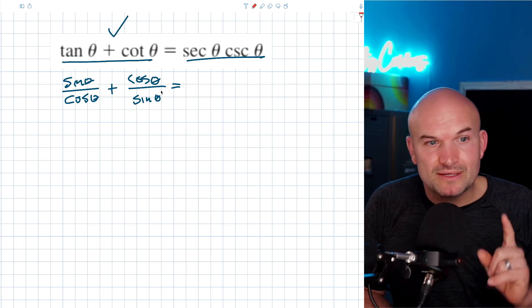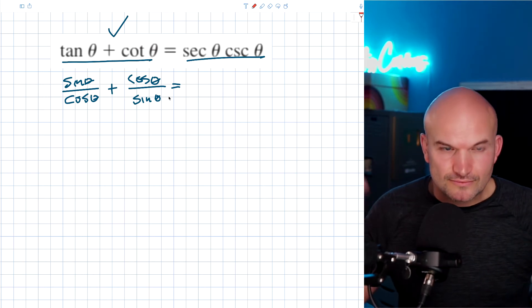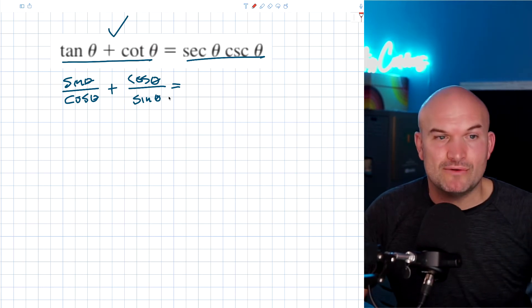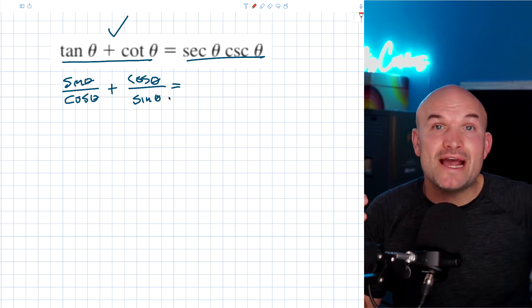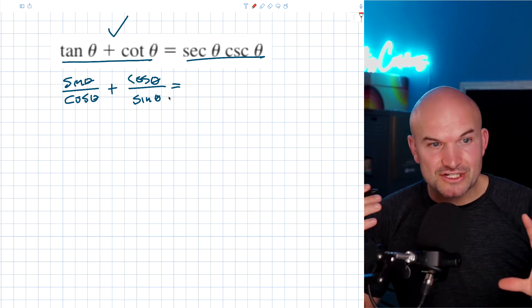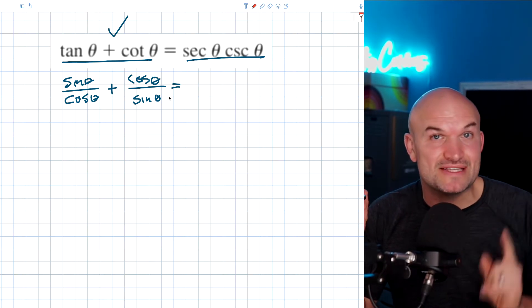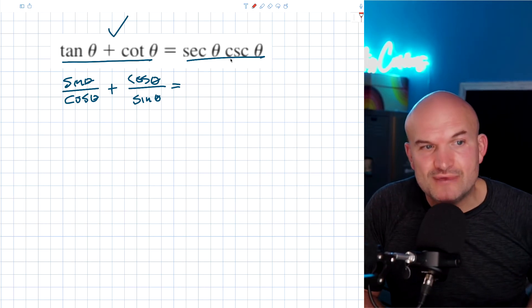Now this is very important because now we say, rather than thinking them as like X plus Y, which we knew we couldn't combine, now we have them as fractions and to combine fractions, they have to have the same denominator. Now, obviously these do not have the same denominator.